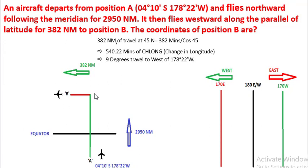Now after reaching 45 degrees north, the aircraft is travelling 382 nautical miles westward. So what we have to find: we have to convert this 382 nautical miles to change in longitude.